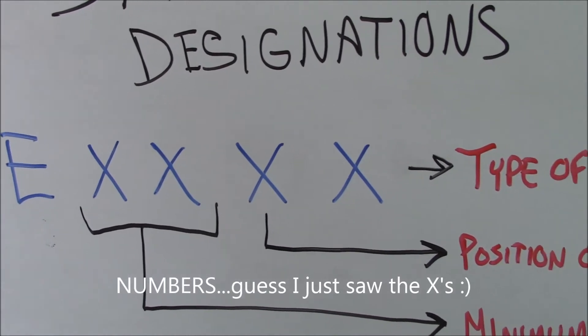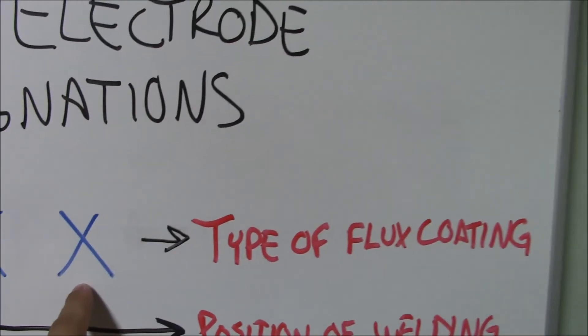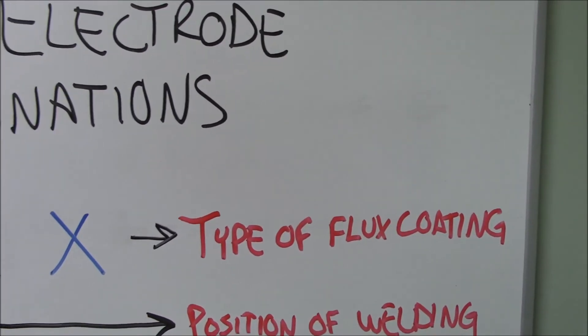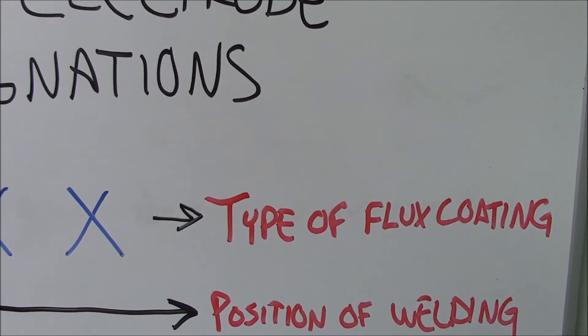So when we look at it, the first letter here, this X, is going to designate what type of flux coating that electrode has. That can be lots of different things.